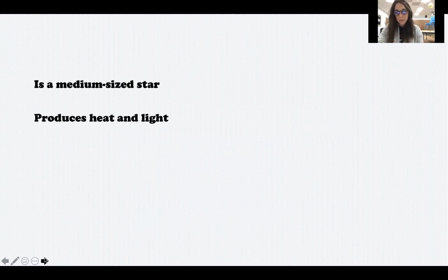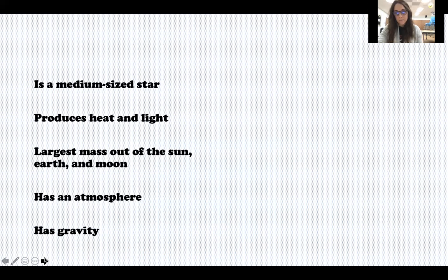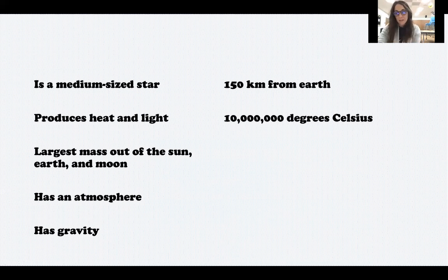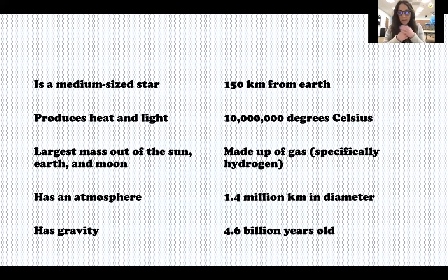I'm going to give you some clues talking about just the sun, earth, or moon. After I give you all the clues, I'll give you a second to think about which one I'm talking about. Here are your clues: it's a medium-sized star, it produces light and heat, it has the largest mass out of the three, it has an atmosphere, it has gravity, it's 150 million kilometers from earth, it is 10 million degrees Celsius, it is made up of gas — specifically hydrogen is the main gas — it is 1.4 million kilometers in diameter, and it is 4.6 billion years old.